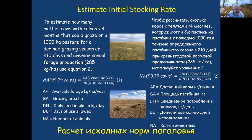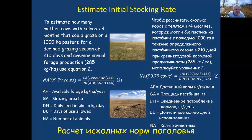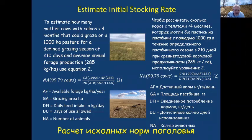To estimate how many mother cows with calves less than four months could be grazed on a 1,000-hectare pasture for a grazing season of 210 days with average forage production of 285 kilograms per hectare, we use equation two: take the grazing area (1,000 hectares) times available forage (285 kilograms per hectare), divide by days allowed (210), then divide by daily feed intake in kilograms per day. The result is approximately 100 cows that could be grazed during this grazing season.